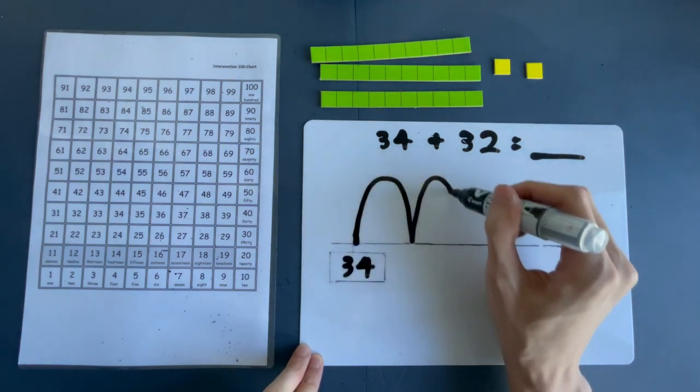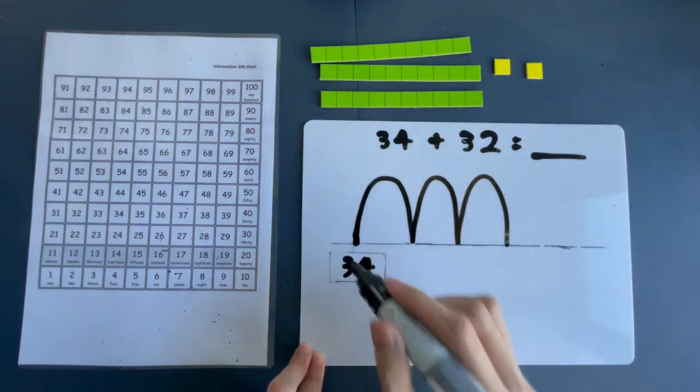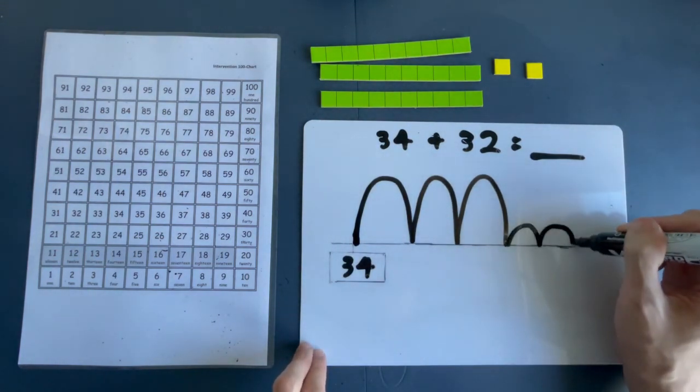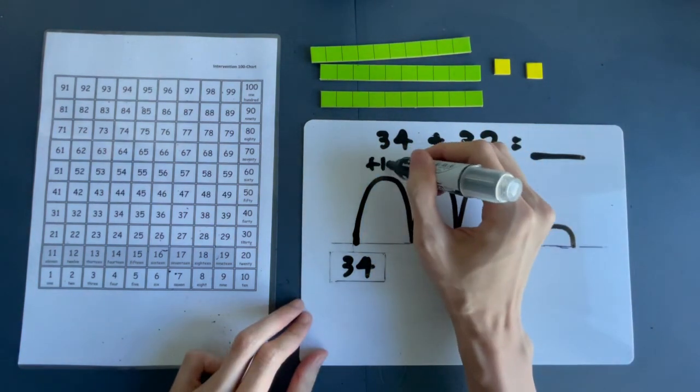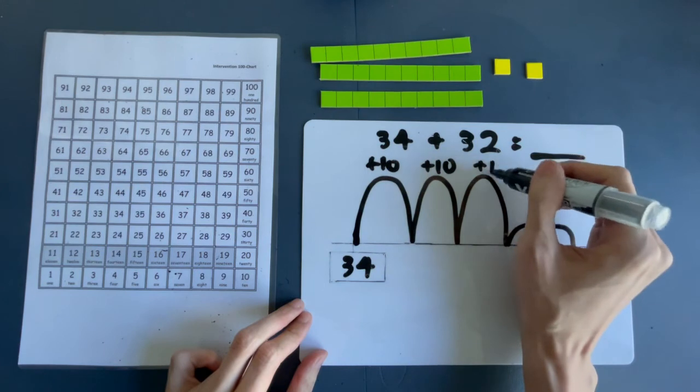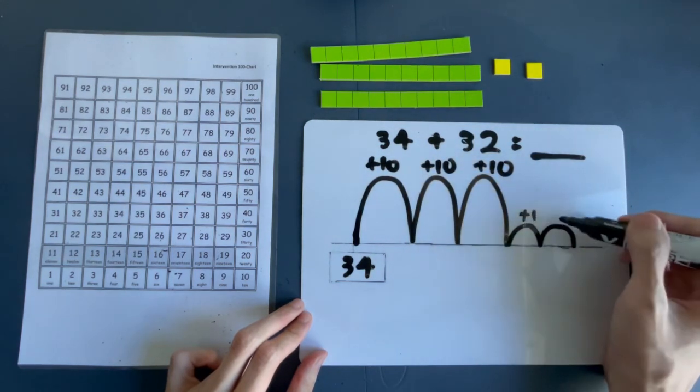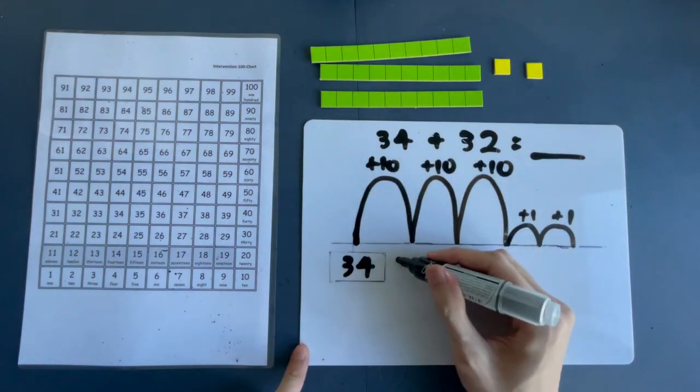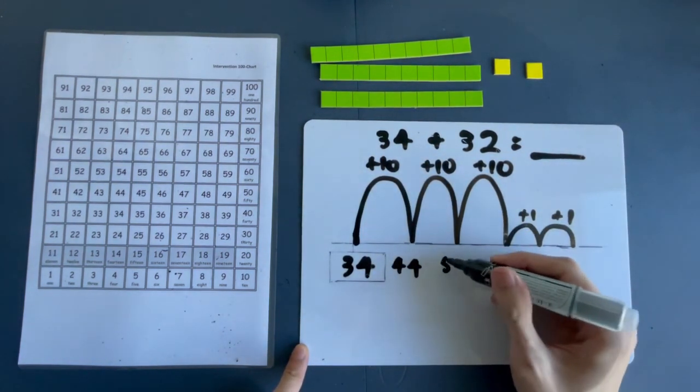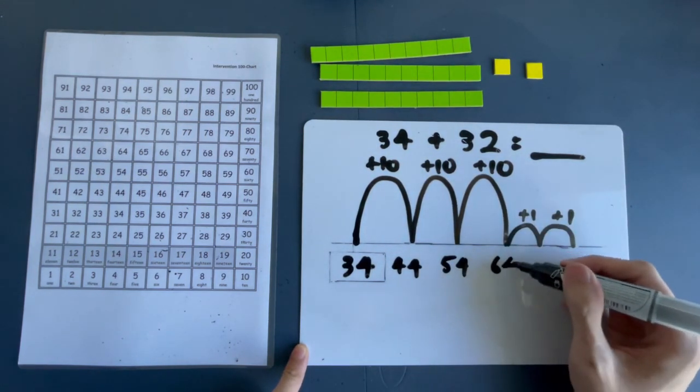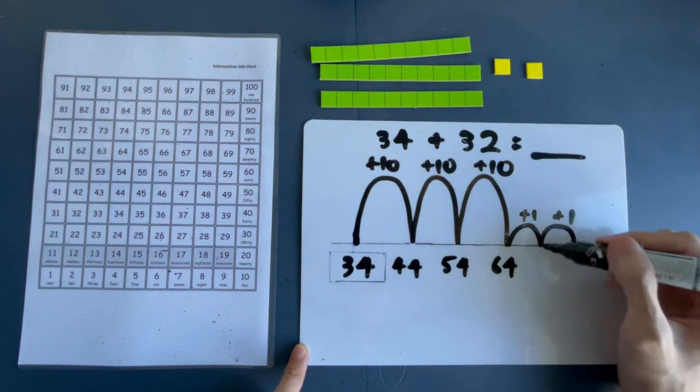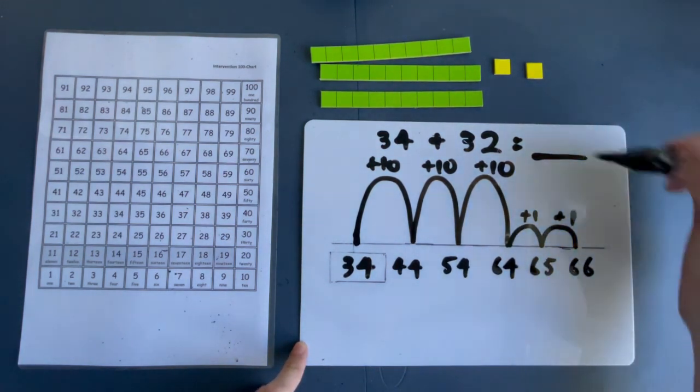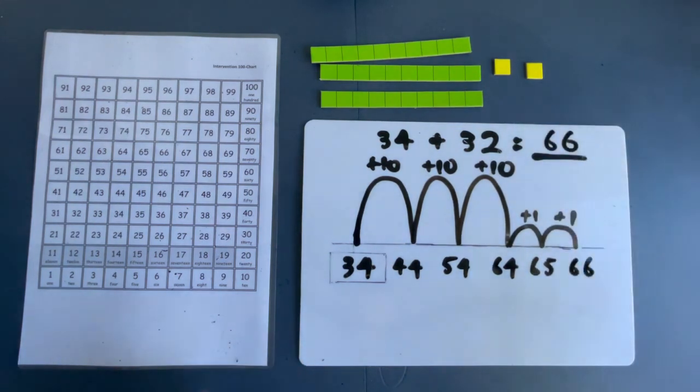3 big jumps. 1, 2, 3. That's counting in 10s. Now, 2 small jumps. 1, 2. So, remember, we are counting in 10s here. And down here, we are counting in 1s. So, let's do that. From 34, what's 10 more? 44. 10 more? 54. 10 more? 64. What's 1 more from 64? 65. And then, 66. So, this 66 is the answer.